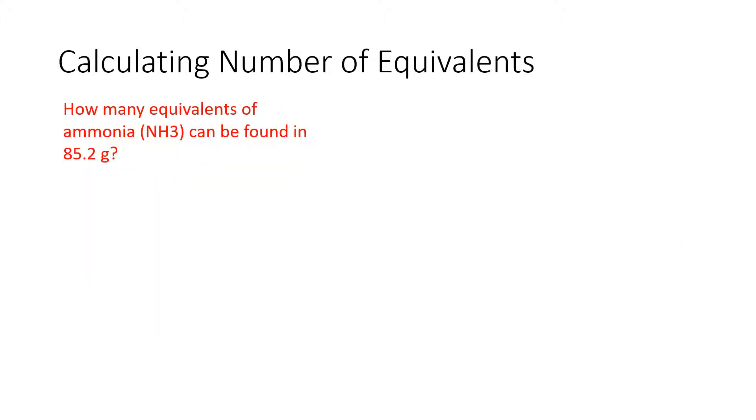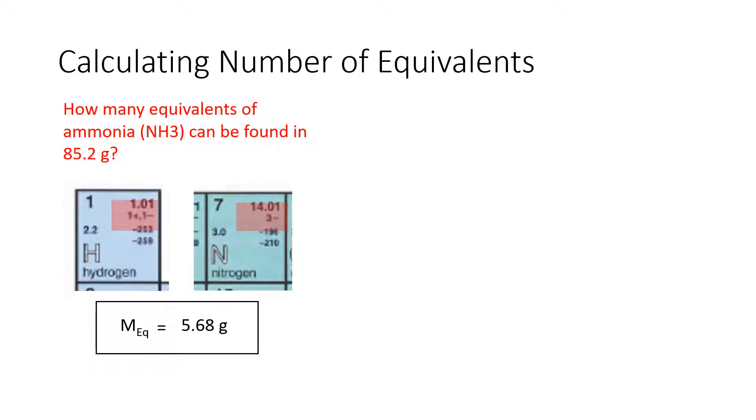Of course like all things what we can do forwards we can do backwards. What if we were given a total mass and we were asked to find the number of equivalents? For example, how many equivalents of ammonia could be found in 85.2 grams? So once again we go back to our trusty periodic table. We calculate the mass of one equivalent which is 5.68 grams and then we go back and rearrange our formula. In this case the number of equivalents will equal the total mass which is the little m over the big M with the little EQ, the mass of one equivalent. Once again that's the total mass divided by the mass of one equivalent.